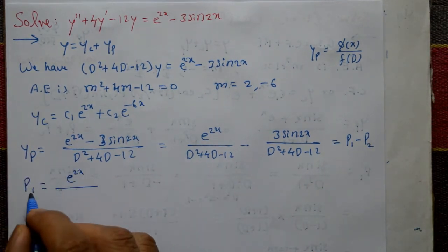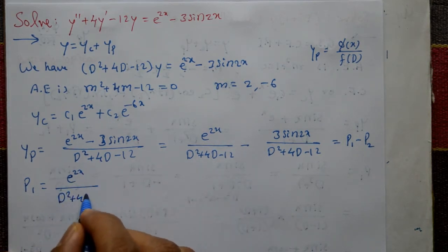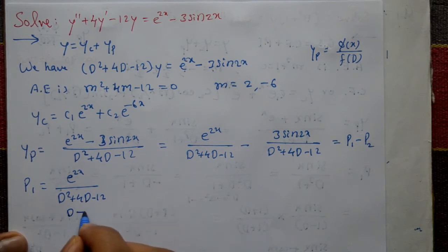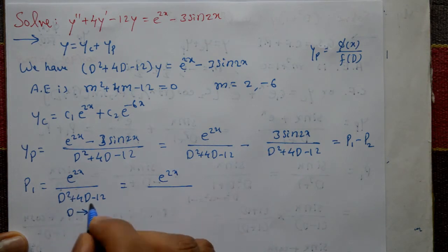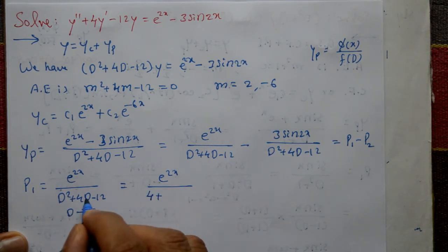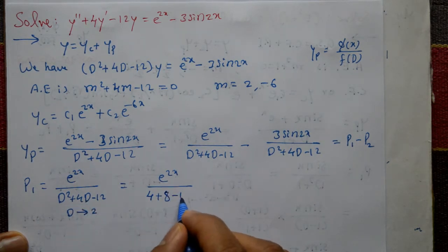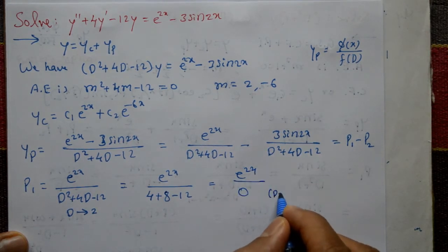Solving P1: P1 = e^(2x) / (D² + 4D - 12). This is Type 1, so substitute D = a = 2. The denominator becomes 4 + 4(2) - 12 = 4 + 8 - 12 = 0. The denominator is zero, so we cannot use this directly.